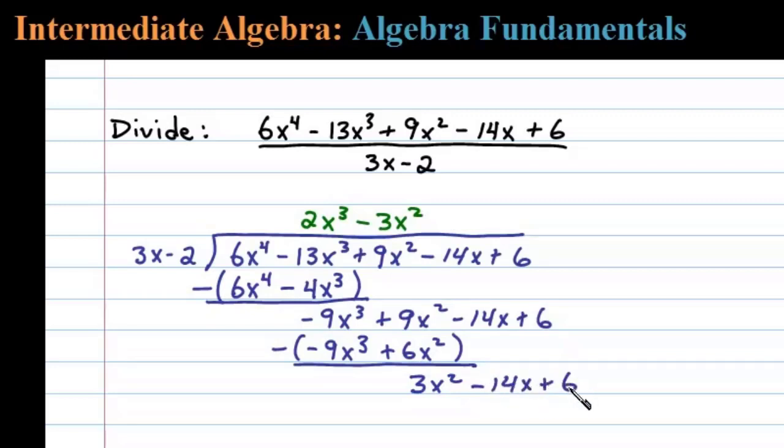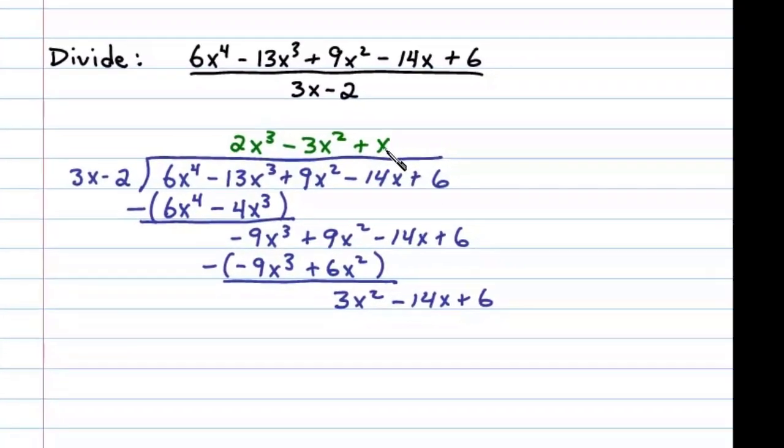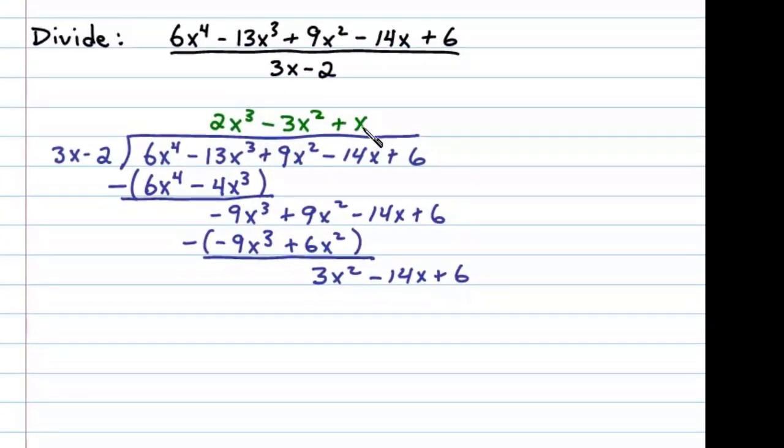Bring down the terms and ask what times 3x will give us 3x squared. Well in this case plus x will do it. x times 3x is 3x squared, x times negative 2 is negative 2x, after which we then subtract.